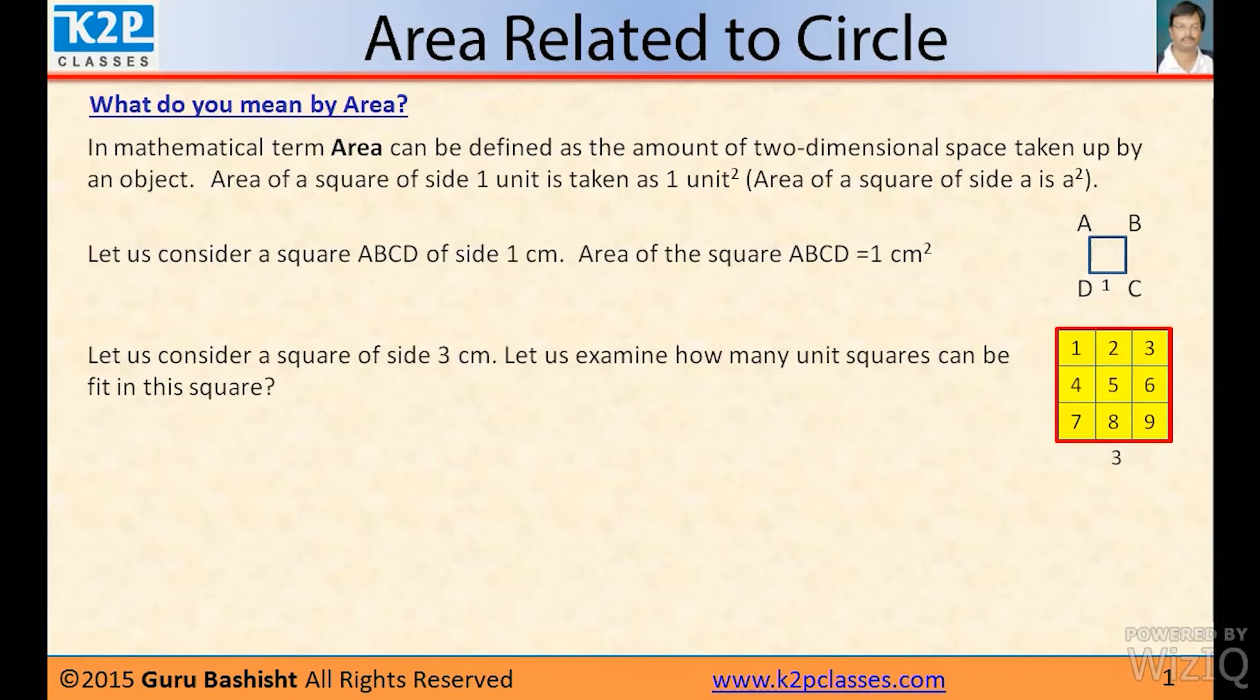We see that nine unit squares can be fit into the square having side 3 cm. So area of the square is 9 cm².